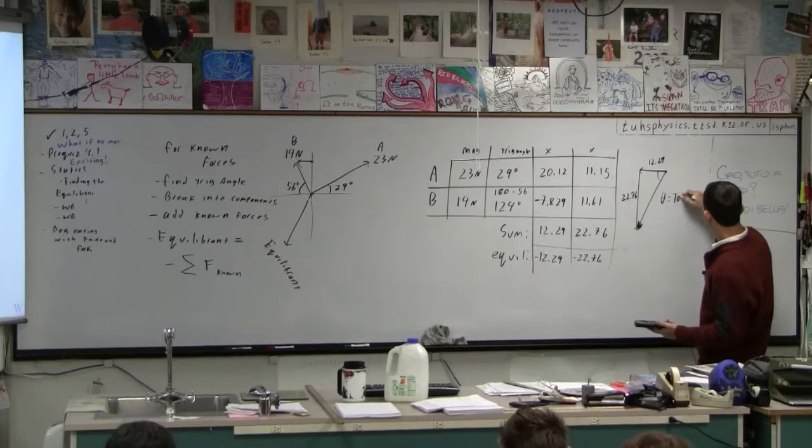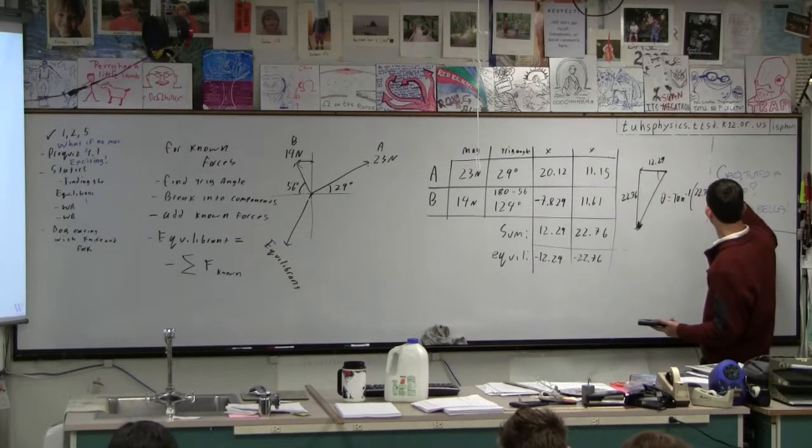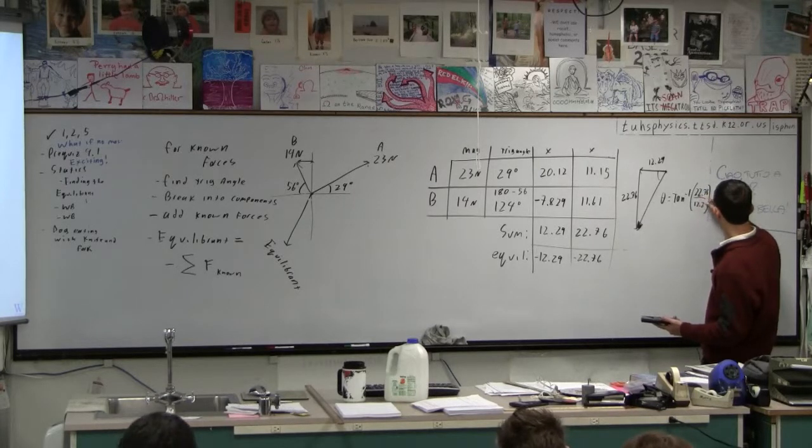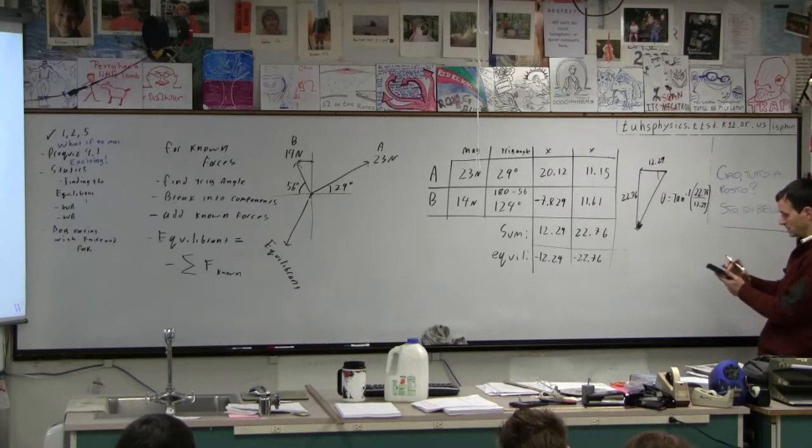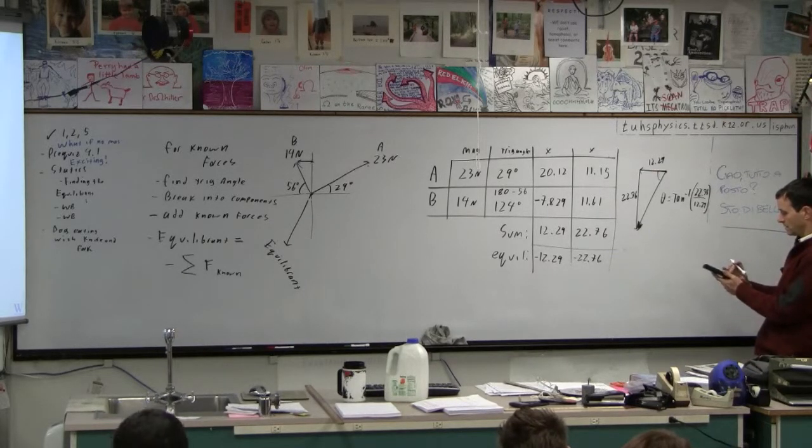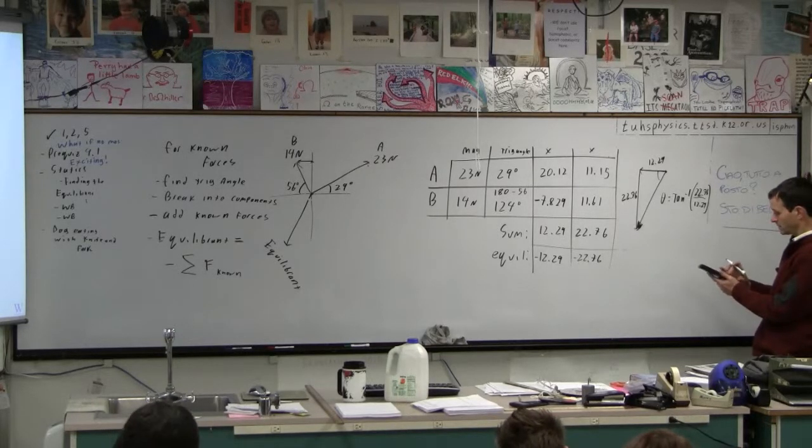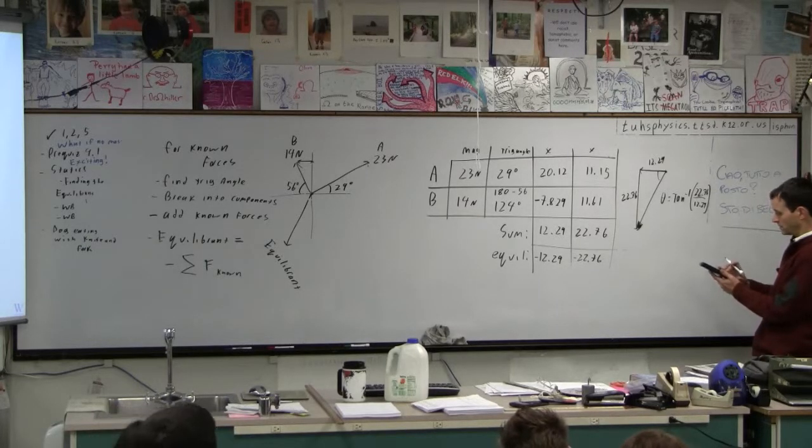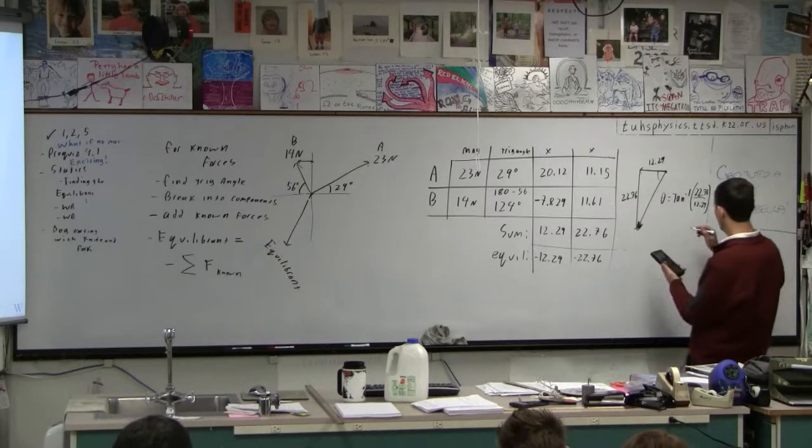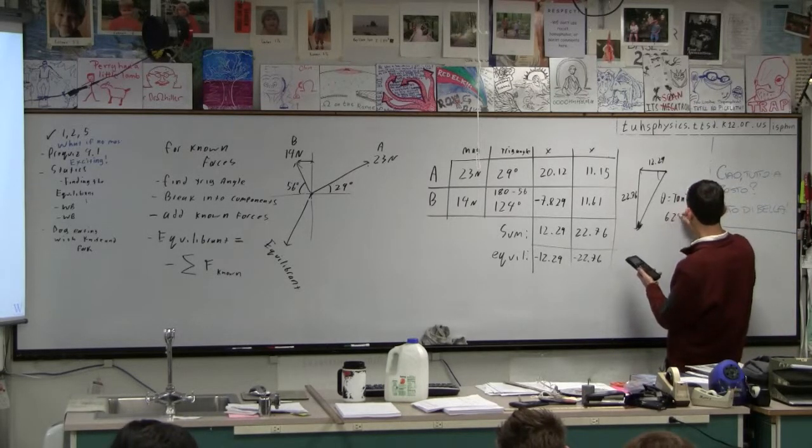So theta is tan inverse of 22.76 divided by 12.29. It's the opposite side over adjacent side. So second tan of 22.76 divided by 12.29, 61.6. So I guess we have two sig figs, so I'd have to say it's 62 degrees, right?